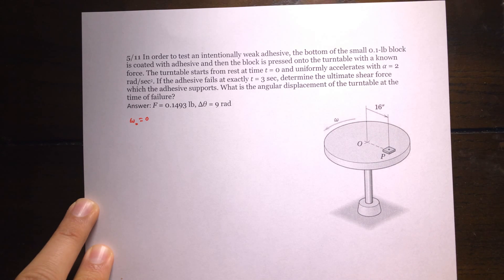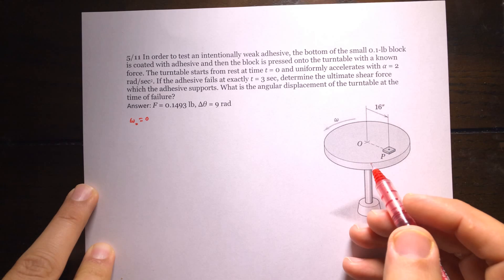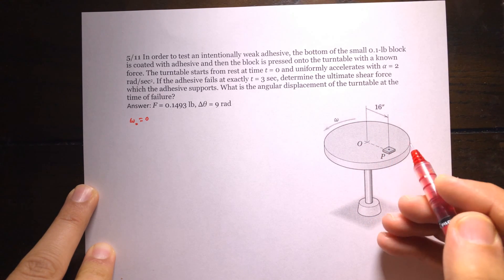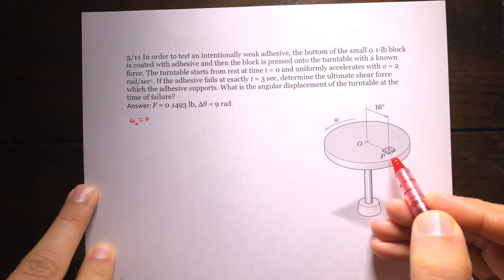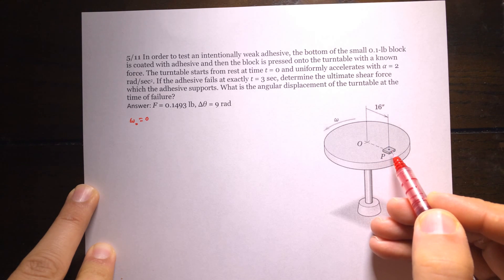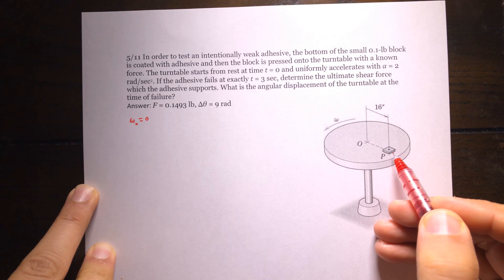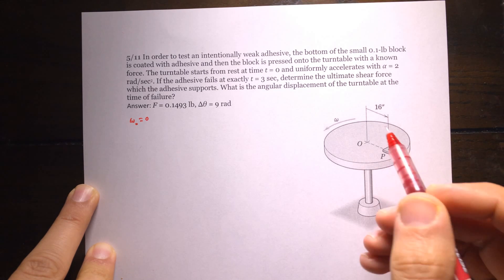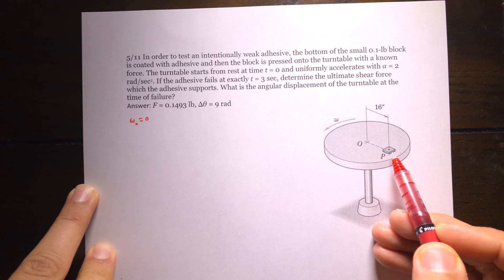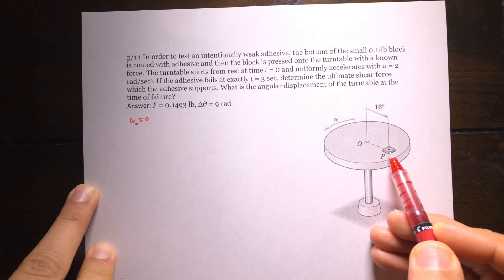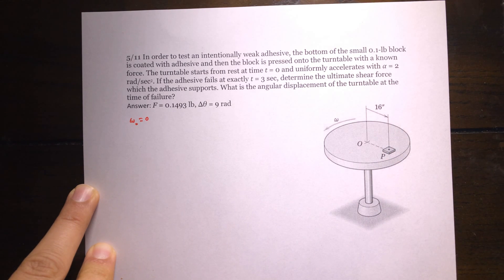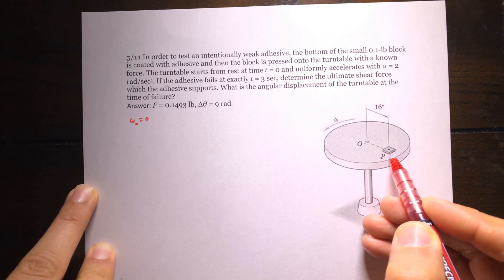By increasing the angular velocity of this rotating table, the acceleration of this block is going to increase. Force is proportional to acceleration based on Newton's equation: F equals ma. So if I find the acceleration of this block at the time of failure, I'm going to figure out what is the force — the shear force — between this block and the table.